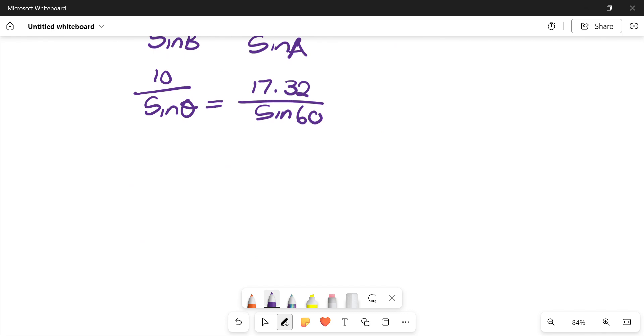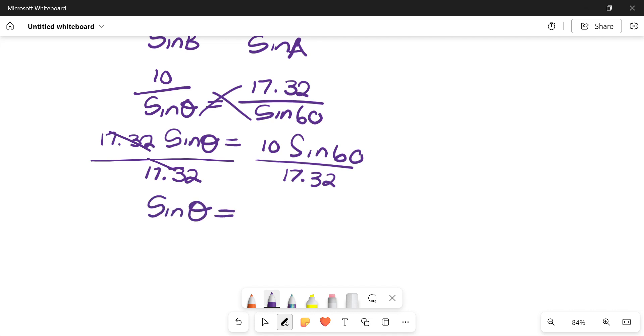That's essentially how we are solving for this bad boy over here. Then we can cross multiply. Then I get 17.32 sine of theta is equals to 10 sine of 60.